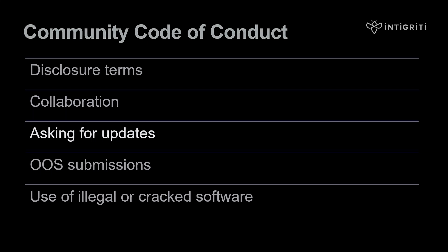Regarding asking for updates: once the vulnerability has been triaged and sent to the affected organization, we request that you wait 30 days before asking for an update. We'll provide an update every 30 days upon request, even if there is no update from the organization. Please bear in mind that the size of the security team at these organizations will vary, as will the number of bugs in the queue.